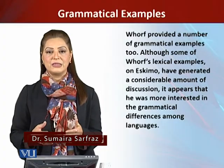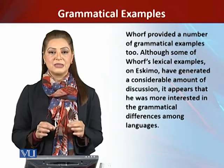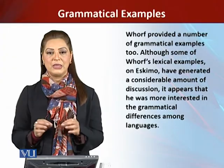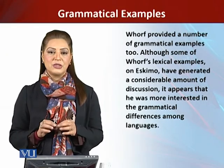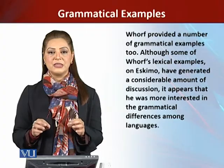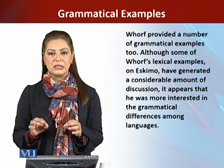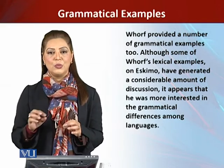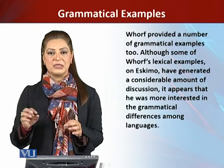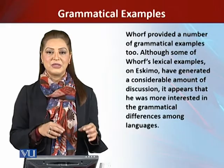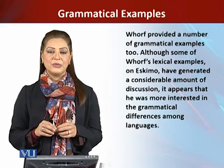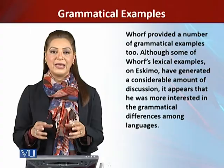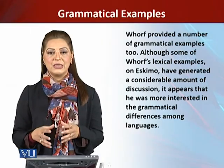He gave an example where he says that the English sentence has a subject and a predicate — for example, 'he invites people to a feast.' So you have a subject and a predicate. In Nootka, there is no such equivalent, and he gave the example: 'boiled-eaters-go-for-he-does.' So as you can see, in English you have a subject and predicate, but in Nootka it is basically one word with a root meaning 'to boil' and five suffixes: eaters-go-for-he-does.